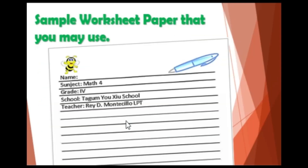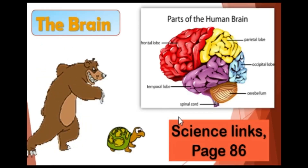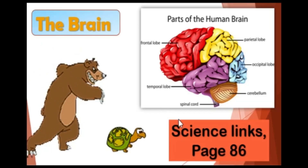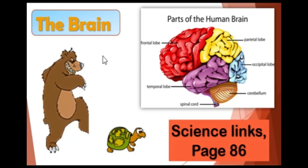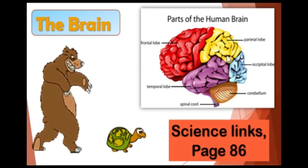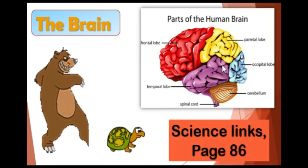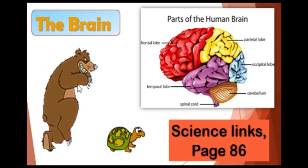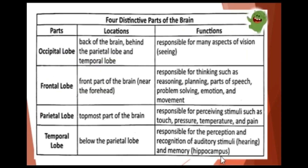This is a sample worksheet paper that you will use for today's lesson. Class, you will be learning about the parts of the human brain. This is a sample picture of the parts of the human brain. This lesson can be found on page 86. We will be talking about the four distinctive parts of the brain.